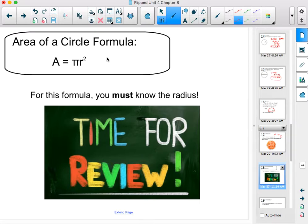Area of a circle. The formula for area of a circle is A equals pi r squared. And for this formula, we absolutely have to know the radius.